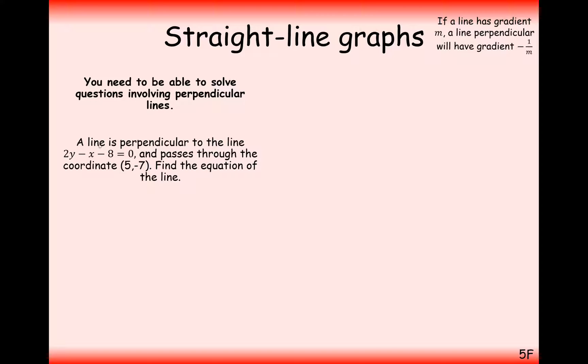Here is the question that we're going to do next. A line is perpendicular to the line 2y minus x minus 8 equals 0 and passes through the coordinate 5, minus 7. Find the equation of the line.